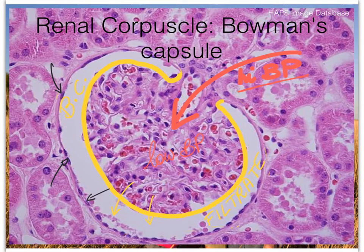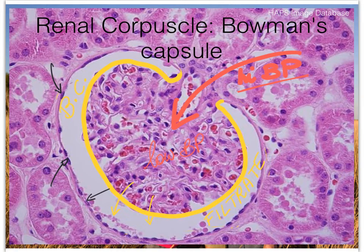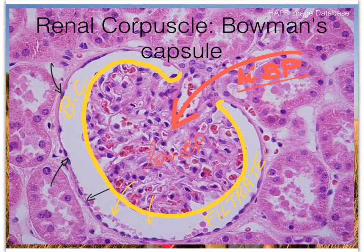So the specific location of simple squamous epithelial tissue is in the wall of our Bowman's capsule. On this slide we also see additional epithelial tissue — those are tubules in the kidneys that squiggle all over the place. They have a lumen and that lumen is lined with simple cuboidal epithelial tissue. So within the same organ — the kidney — we see simple squamous epithelial tissue as well as simple cuboidal.